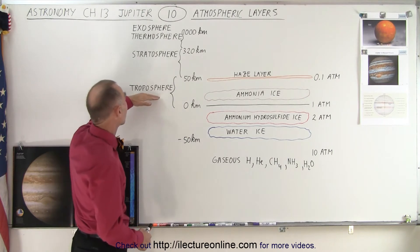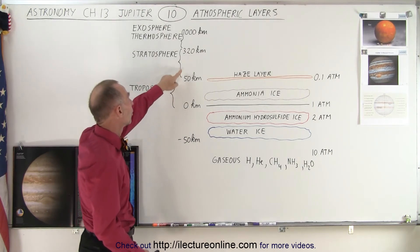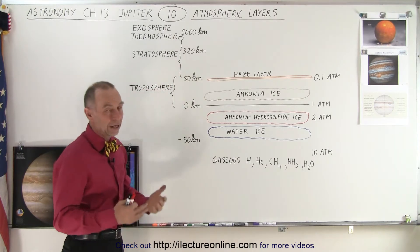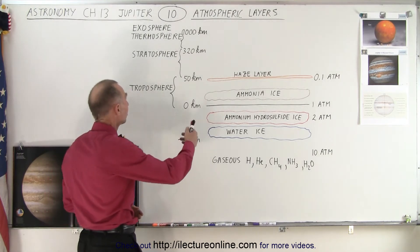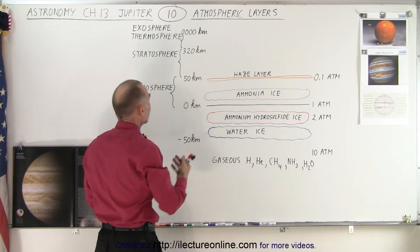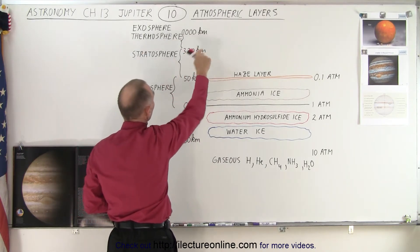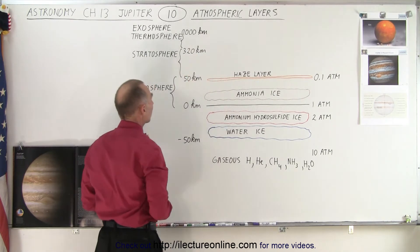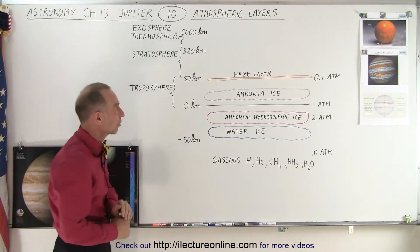Above the troposphere we have a stratosphere that goes from about 50 kilometers to about 320 kilometers. The atmosphere continues to get colder until we reach the top of the stratosphere, where the temperature begins to increase again. That region is what we call the thermosphere, from 320 kilometers to about 1,000 kilometers up from the one-atmosphere pressure point.